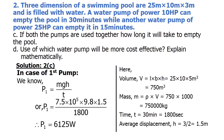Now creative question number two: three dimensions of a swimming pool are 25 meter, 10 meter, and 3 meter, and it is filled with water. A water pump of power 10 hp can empty the pool in 30 minutes, while another pump of power 25 hp can empty it in 15 minutes. Question C: if both pumps are used together, how long will it take to empty the pool? Question D: use of which water pump will be more cost effective?